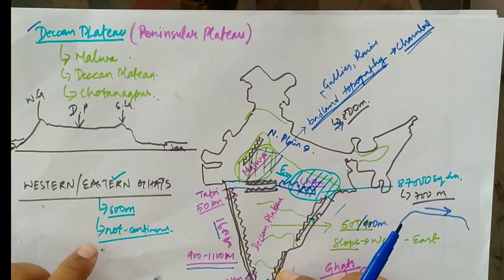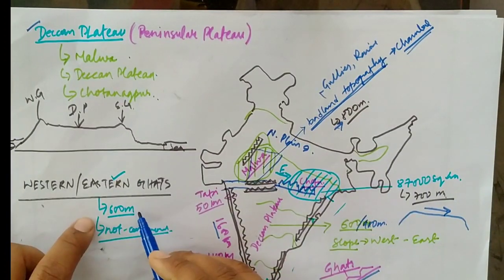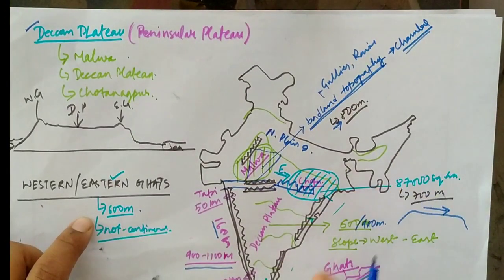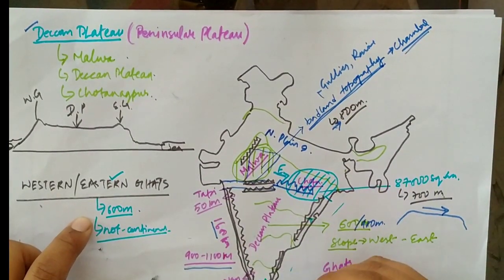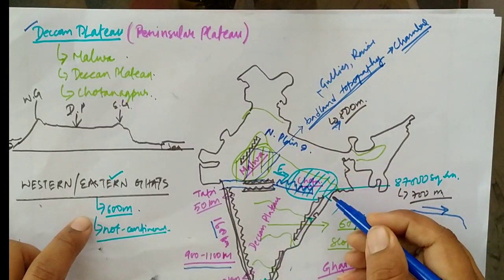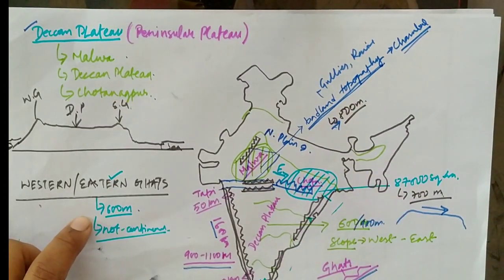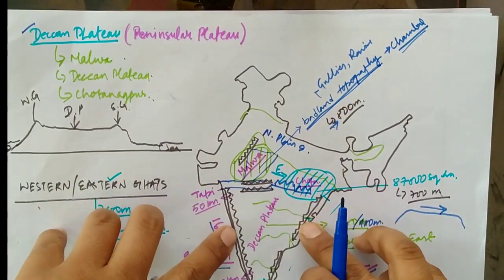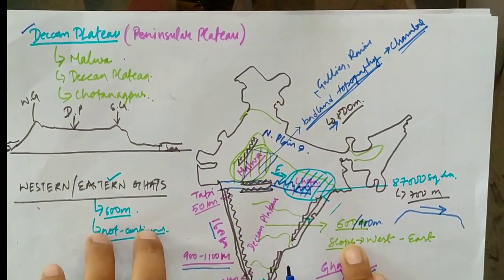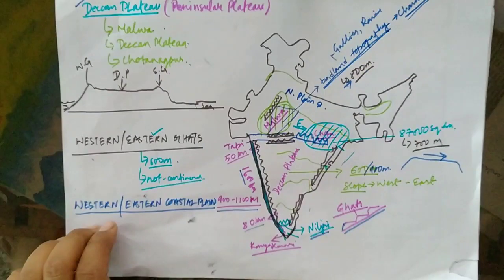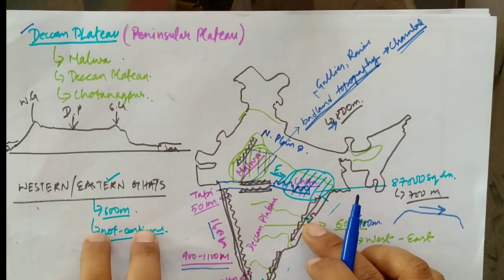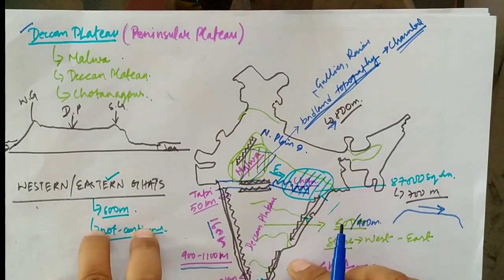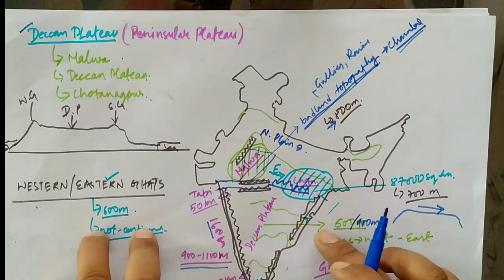Now the Eastern Ghats: unlike the Western Ghats, the Eastern Ghats are not a continuous chain of mountains. They have an average height of 600 meters and run parallel to the eastern coastal plain. Both the Eastern Ghats and Western Ghats come towards the south and merge in the hills of Nilgiri.